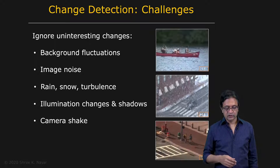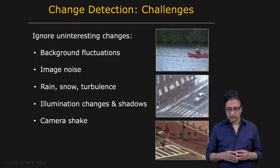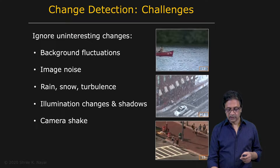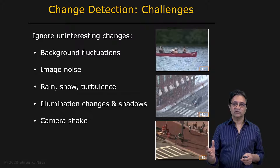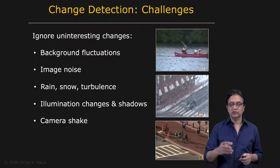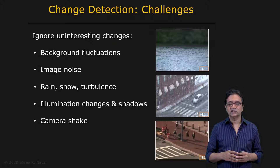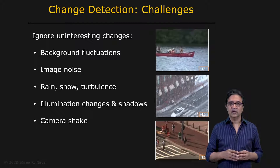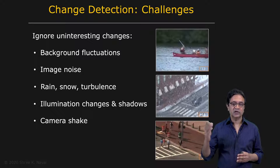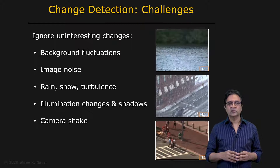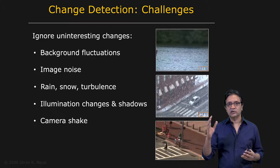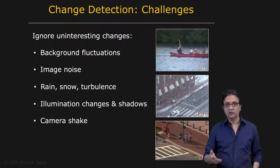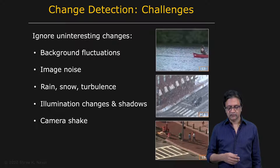There are more challenges. Illumination changes: you can see that with each person moving, there's a shadow attached to them. The shadow itself is not of interest — it's the people who are of interest. Can we make our change detection algorithm resilient to these illumination effects? Finally, camera shake: an outdoor camera sitting on a pole can shake due to wind, creating fluctuations at essentially all pixels in the video over time.